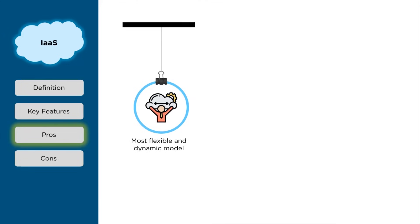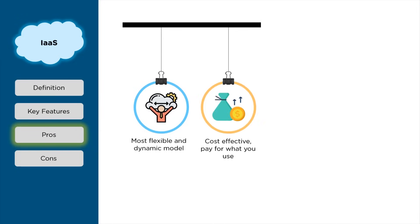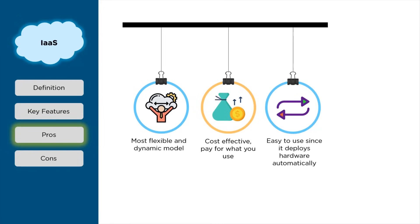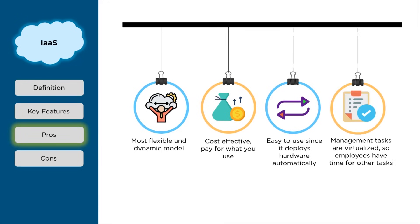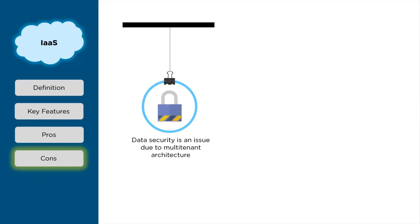The pros of the IaaS model: firstly, it is highly flexible because only the infrastructure is provided and the rest depends on customer requirements. It is cost-effective — you pay for what you use. It is easy to use as all updates and hardware are deployed automatically. Management tasks are virtualized, freeing other employees for additional tasks.